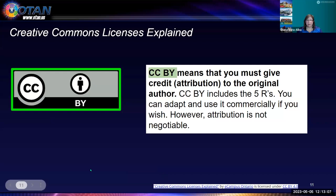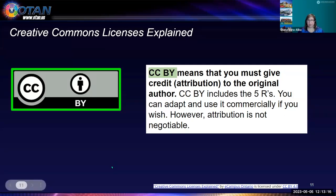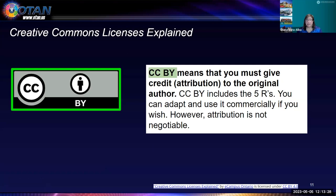Since most of you are familiar with Creative Commons licenses, I'll go through this portion a little quickly. CC BY means you must give credit — attribution — to the original author. CC BY includes those five R's. You can adapt and use this resource commercially if you wish; however, attribution is not negotiable. You must give credit to the original author.